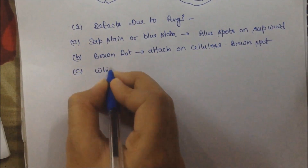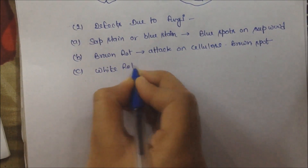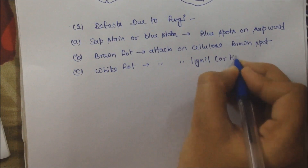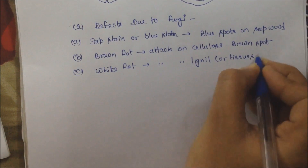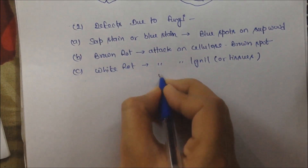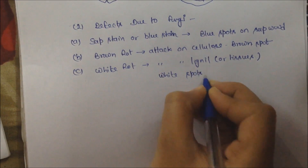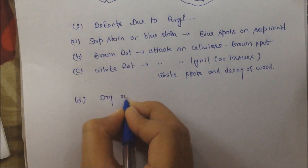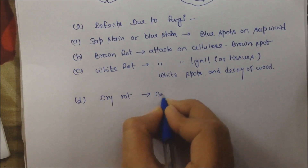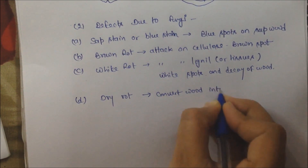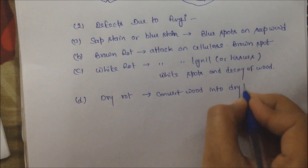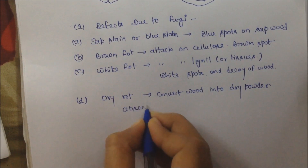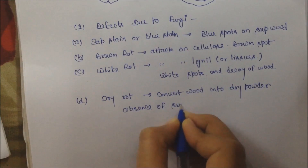Next is White Rot. It occurs in the absence of sunlight and dampness, and fungi convert wood into dry powder. That is called Dry Rot.